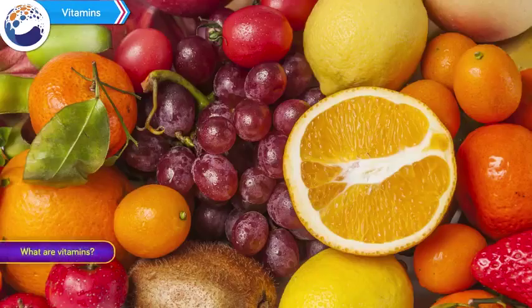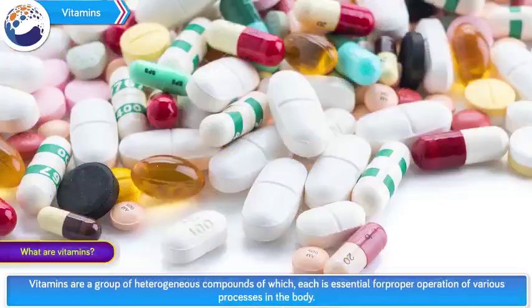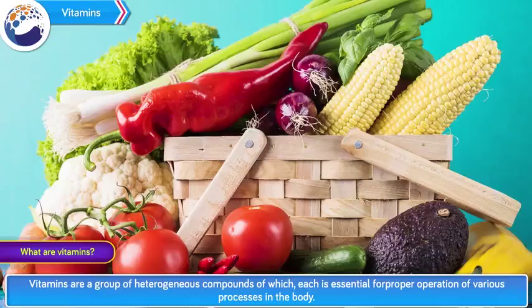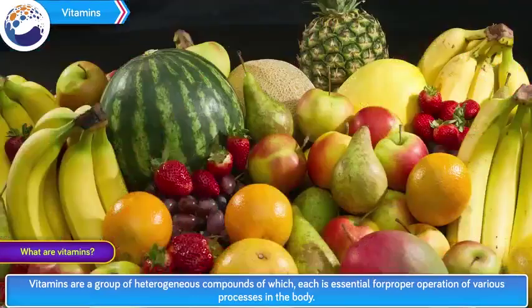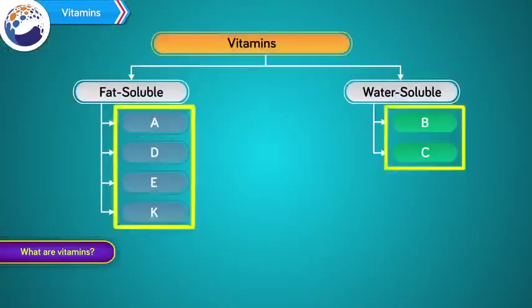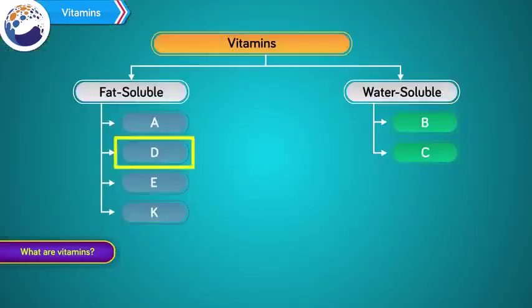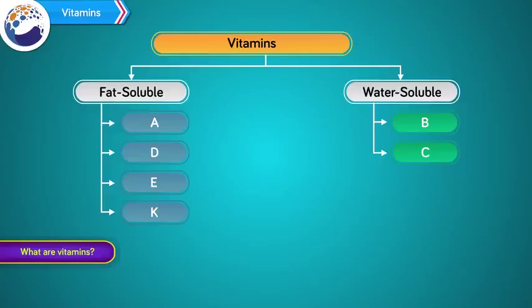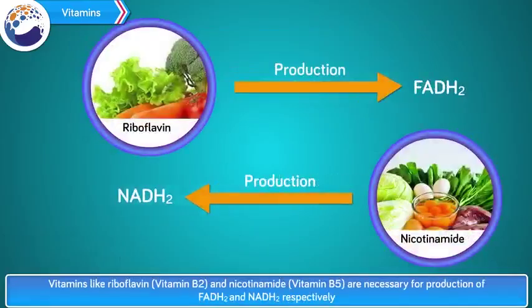Vitamins are a group of heterogeneous compounds of which each is essential for proper operation of various processes in the body. There are 6 main vitamins: 4 are fat-soluble — vitamins A, D, E and K — whereas vitamins B and C are water-soluble. Vitamins like riboflavin (vitamin B2) and nicotinamide (vitamin B5) are necessary for production of FADH2 and NADH2 respectively.